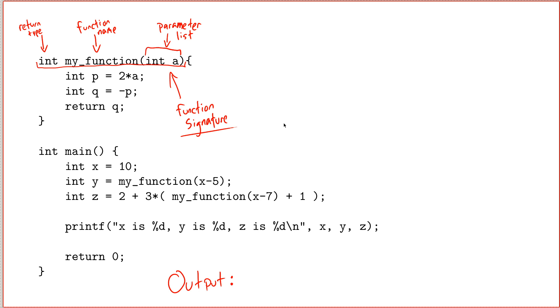For example, if I want to call this function, I need to provide one parameter, and that'll be what ends up being called a. And the function will be called my_function, and it will send back an int value. So that's one thing.